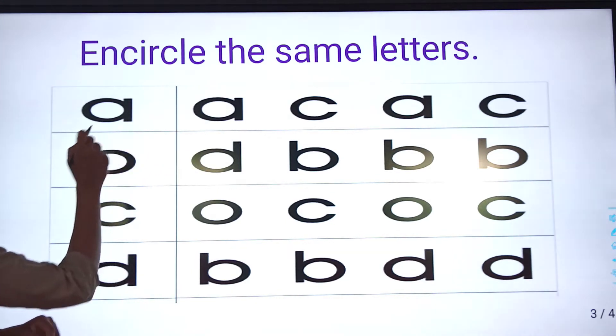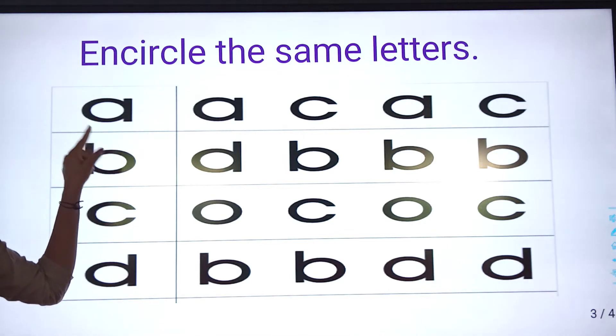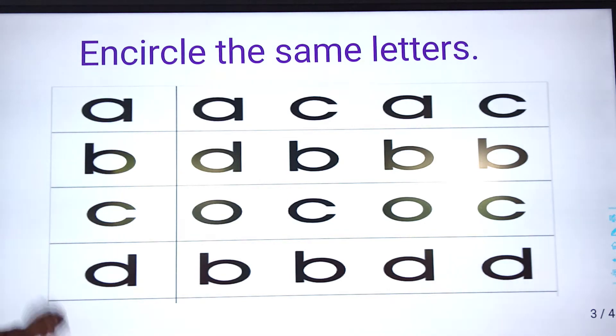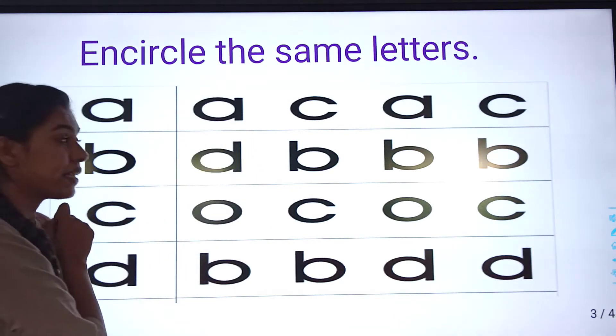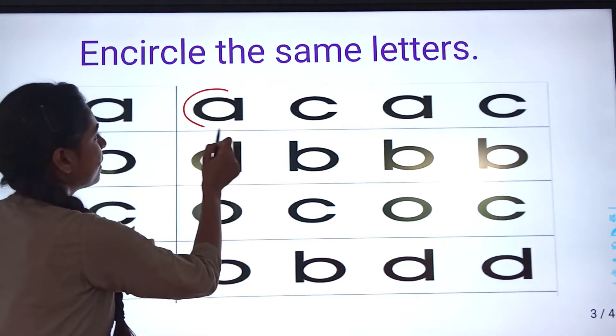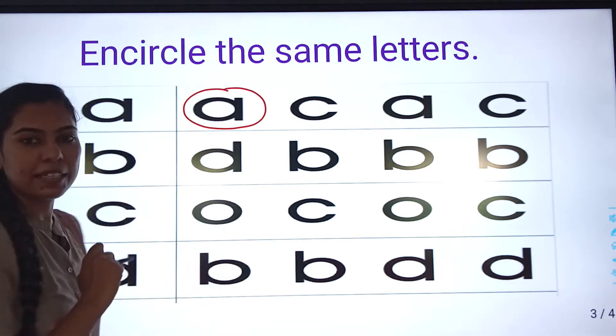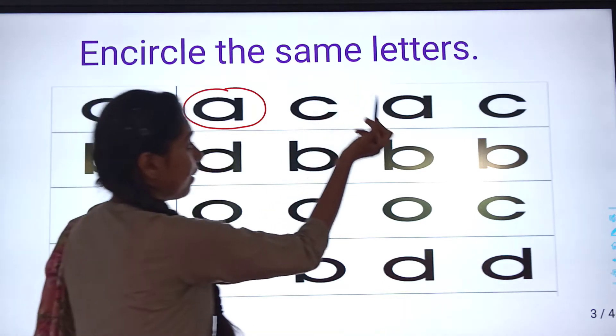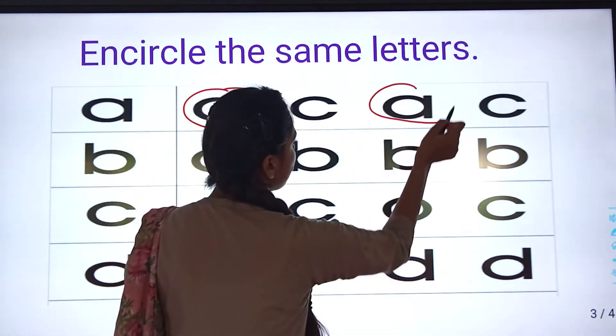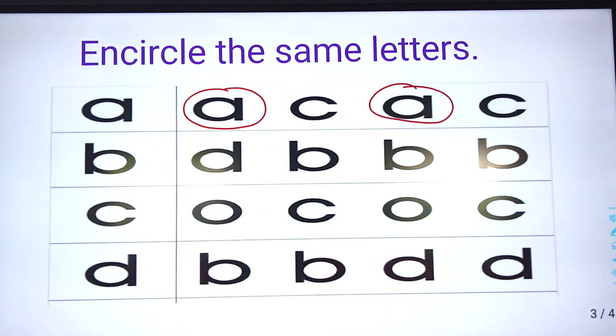See the first letter? This is small letter a. Right? So, yaha pae small letter a hai. Dekho, yes, it is there. Then, circle karay ga. Again, a, a. Yes, jitne bhi a hooga, usmei hap circle karay ga.